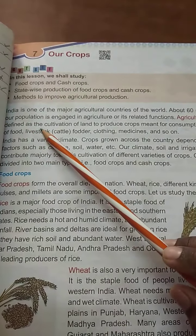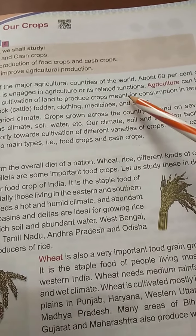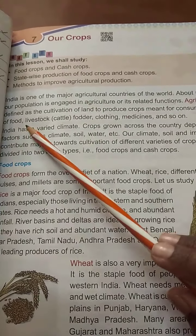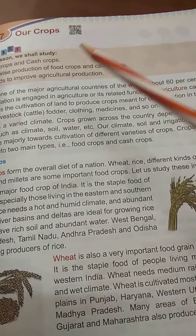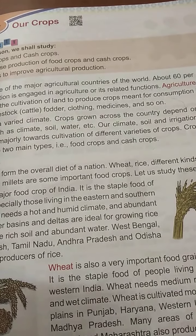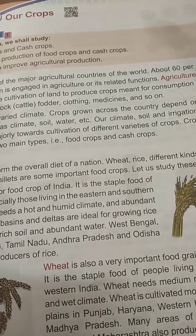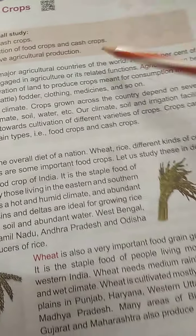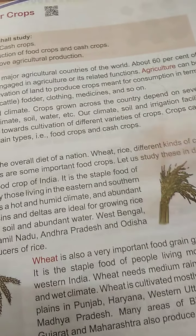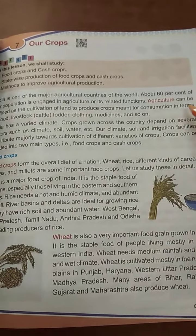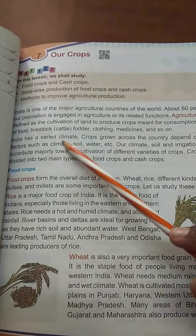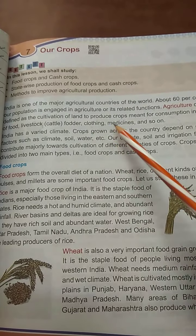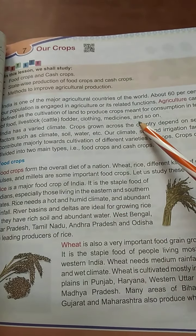Agriculture can be defined as the cultivation of land to produce crops meant for consumption in terms of food. So agriculture is the cultivation of land — for food, fodder for animals, clothing, medicines, and so on. All of these are agriculture purposes.